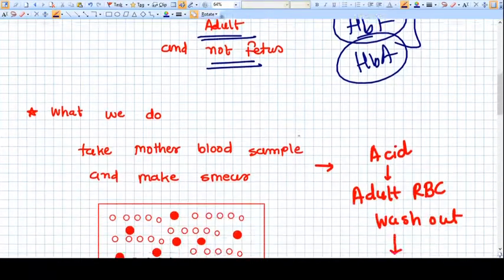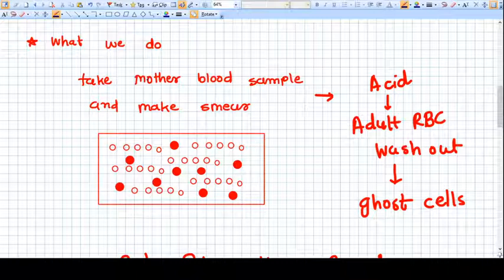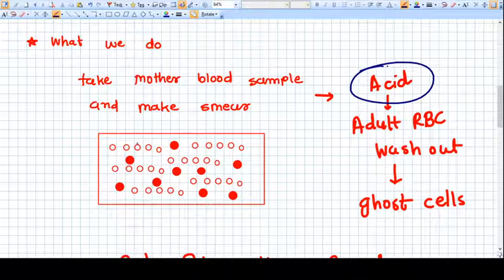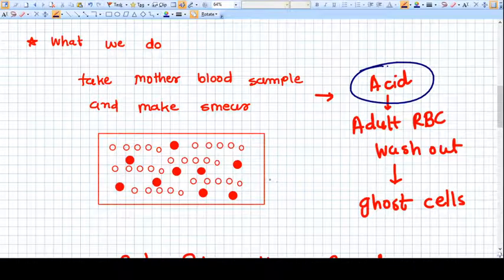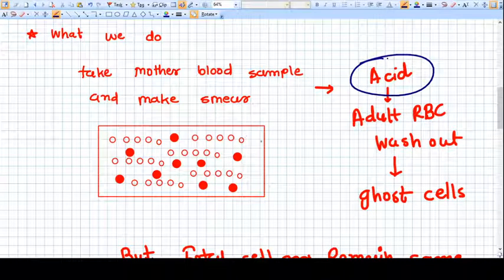What we do here when we want to know the fetal hemorrhage? We take the mother's blood sample and make a smear. Then we process the slide with acid. This acid will react with the adult RBCs, that is mother RBCs, and the hemoglobin will be washed out.